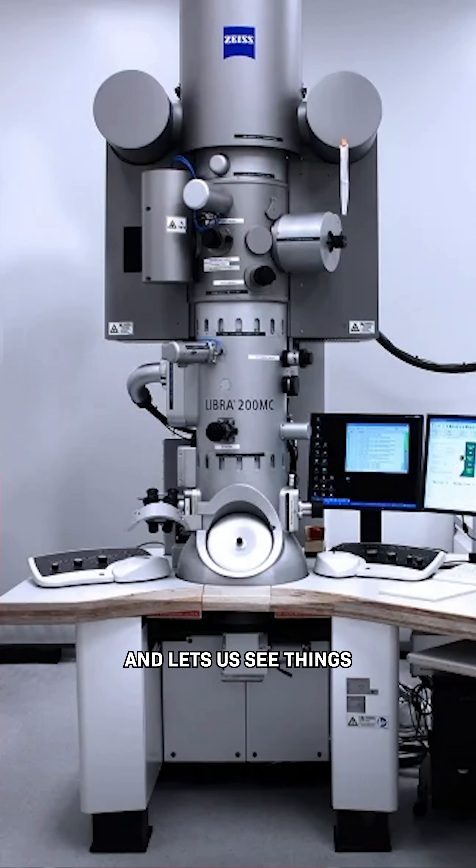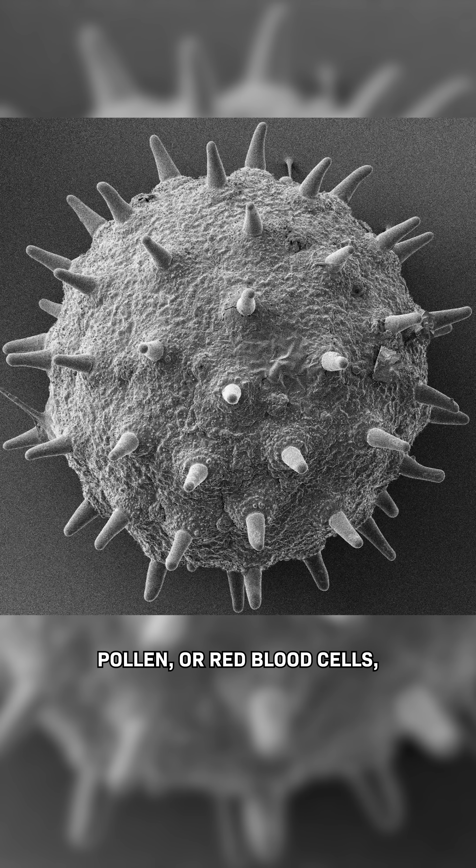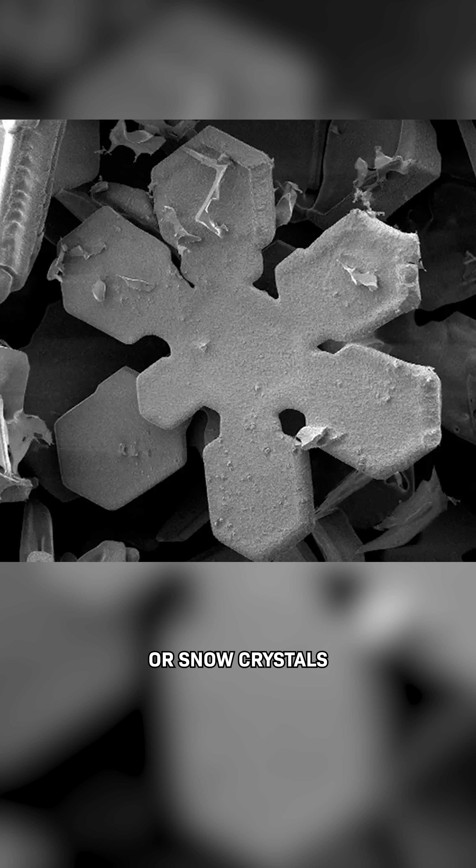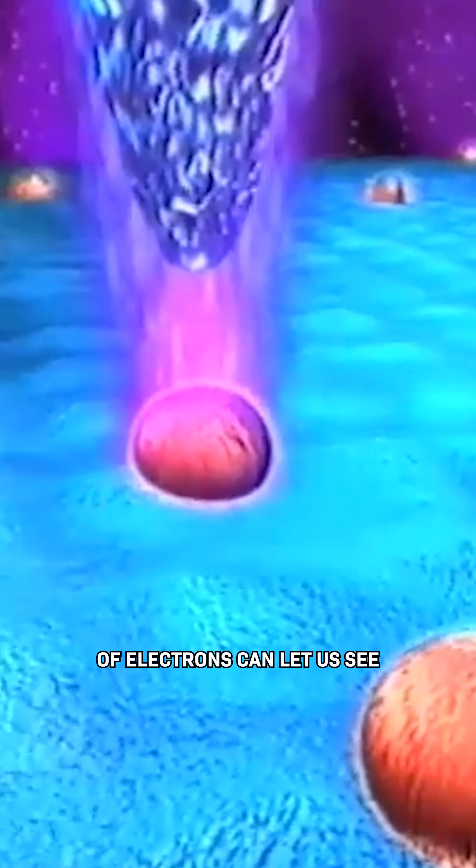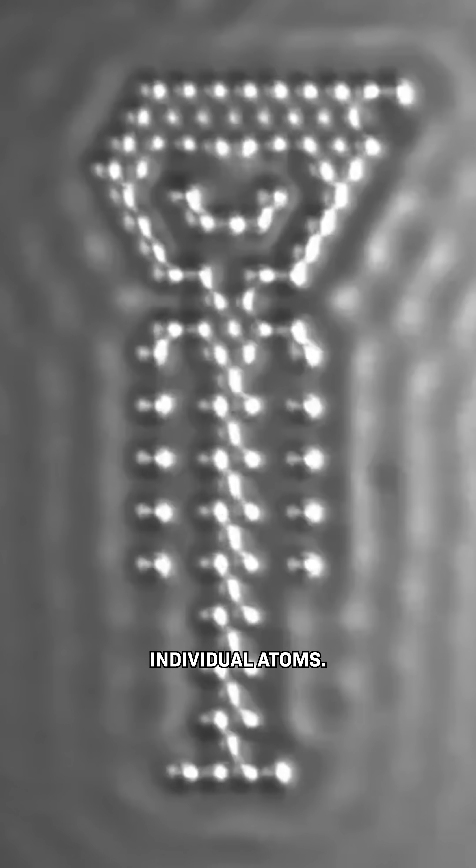That's how an electron microscope works and lets us see things like these high-res images of pollen or red blood cells or snow crystals. And even higher resolution microscopes that use the quantum properties of electrons can let us see individual atoms.